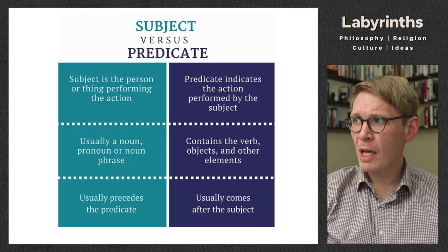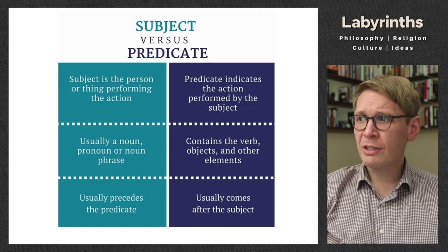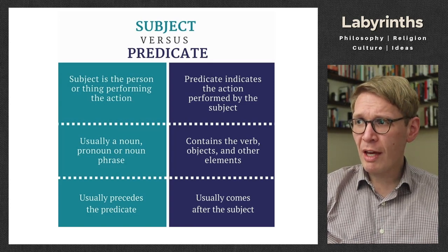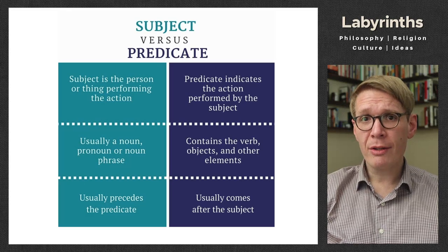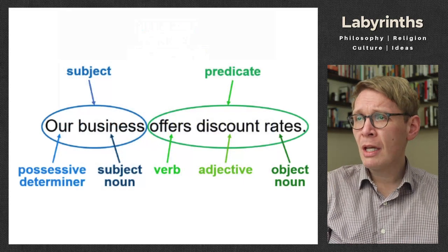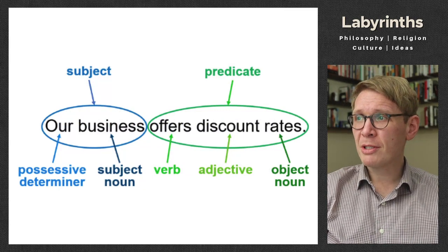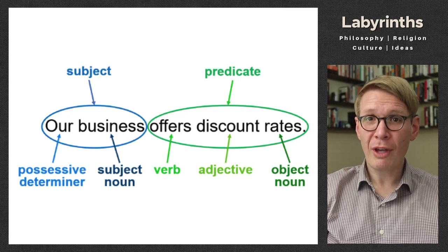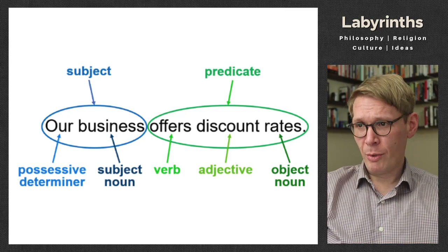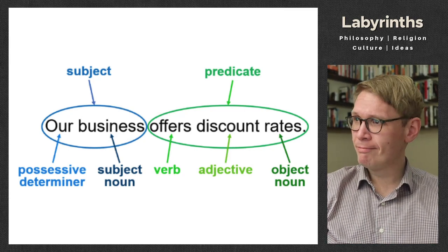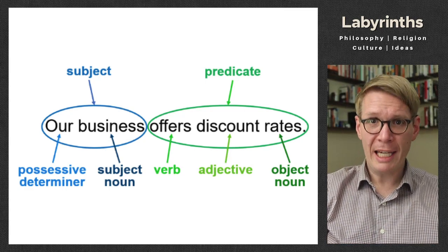A predicable is something that you can predicate of a subject. The subject is the person or thing performing the action. The predicate indicates the action performed by the subject. So the predicate of a sentence contains the verb, the object of that verb if there is one, and any other information that you are attributing to — predicating of — the subject. As in the example from our first lecture: 'Our business offers discount rates.' The subject is 'our business,' and we are predicating 'offers discount rates' of that subject.